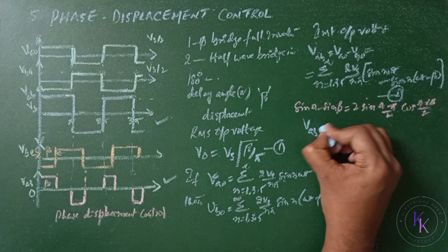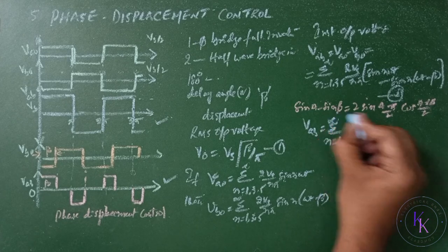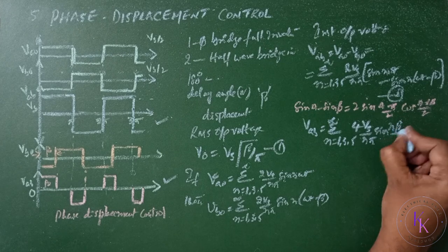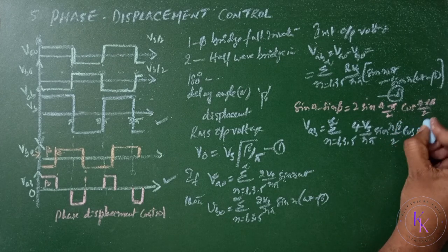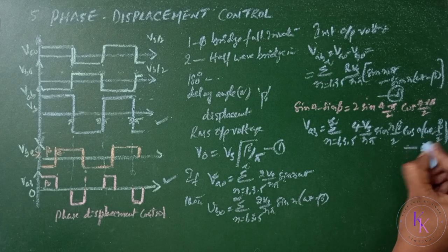then we are going to get VAB equals sigma n equals 1, 3, 5 to infinity, 4Vs by n pi sine n beta by 2, cosine n of omega t minus beta by 2. Let it be equation number three.